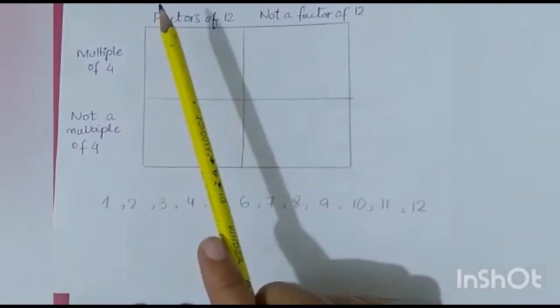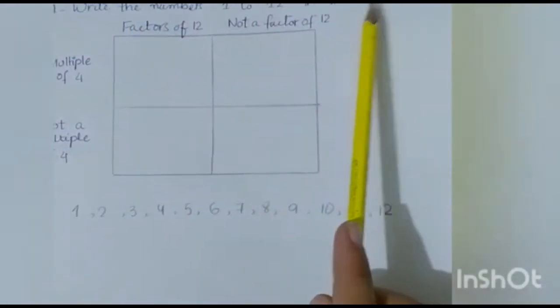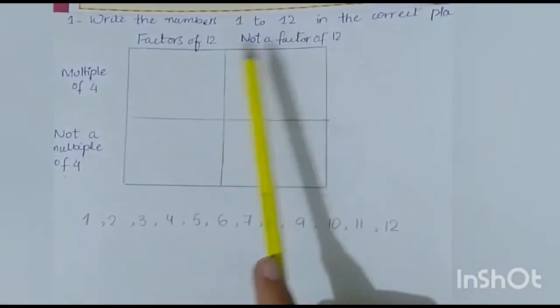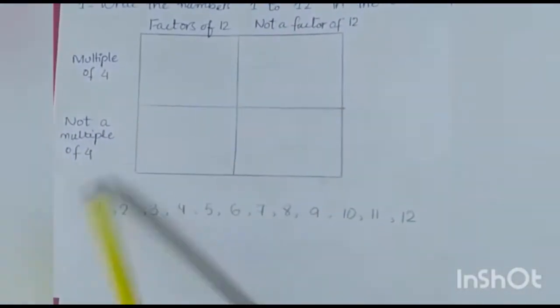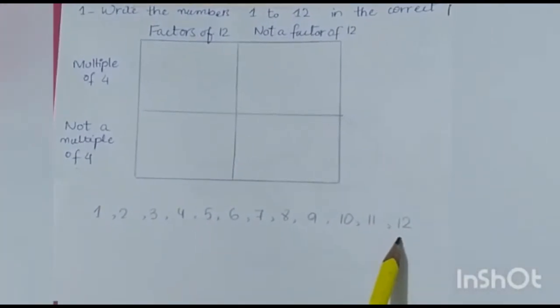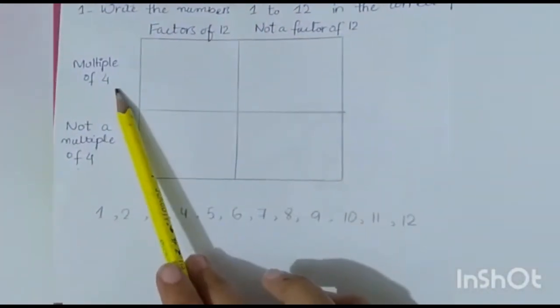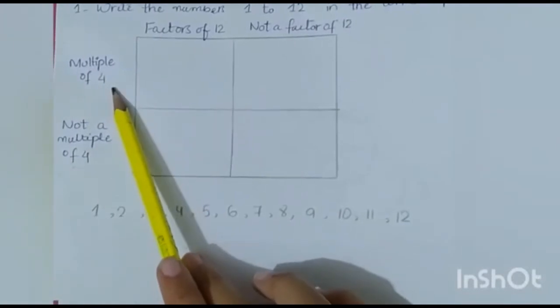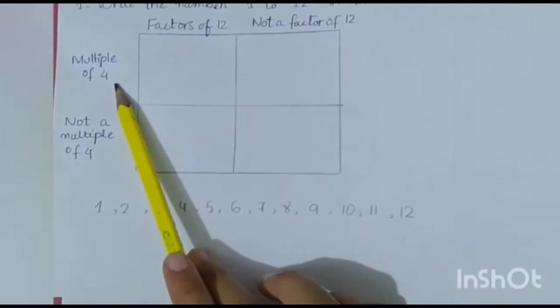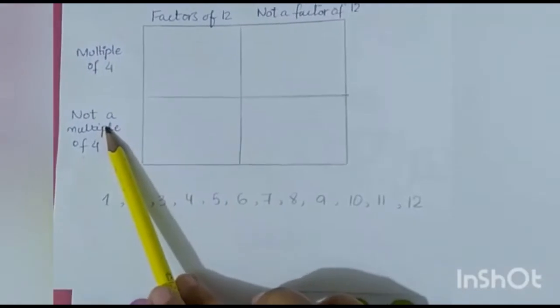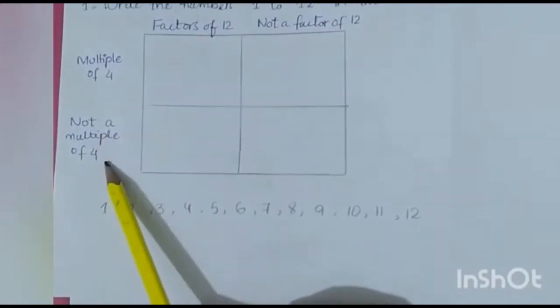We have to solve this in the book. The question says: write the numbers 1 to 12 in the correct place. We have to write how many numbers and then we have to write them under: multiple of 5, multiple of 4, and not a multiple of 4.